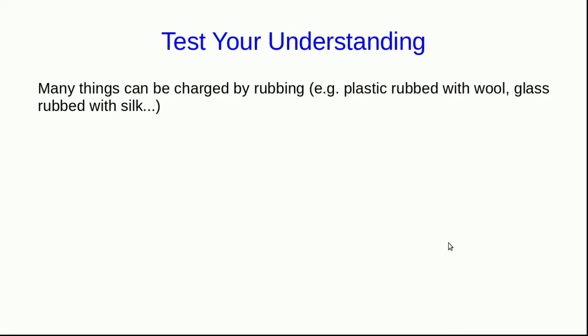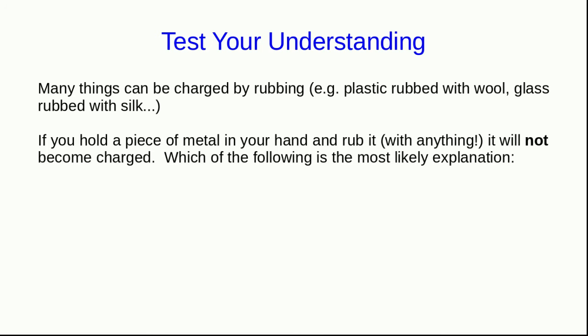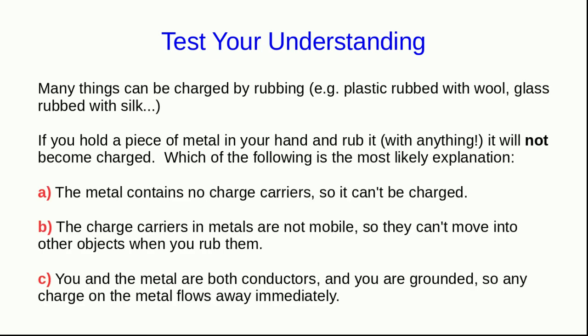Let's have a question to see how well you're understanding things. So as you've seen, many things can be charged by rubbing. The example we've seen is plastic rubbed with wool. Another example is glass rubbed with silk. But if you hold a piece of metal in your hand and rub it with anything, it doesn't matter what you rub it with, it will not become charged. So here are three possible explanations for this. Choose which one of these you think is the most likely. So if you're in the course, of course you'll be asked on Moodle to do this before you go on to the next part of the lecture. If you're not in the course, then you should really come up with an answer anyway to make sure that you're following along.